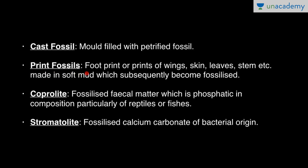Print fossils are footprints or prints of wings, skin, leaves, stem, etc., made in soft mud which subsequently becomes fossilized. There are imprints of footprints or wings on soft mud, and eventually it becomes fossilized. This type is called print fossil and it is also one of the most common types of fossil.